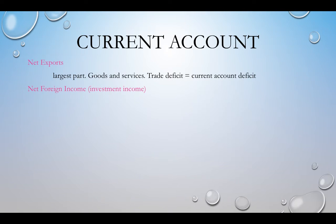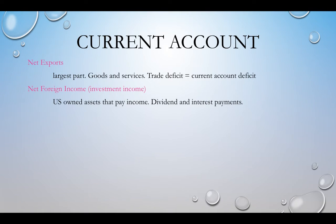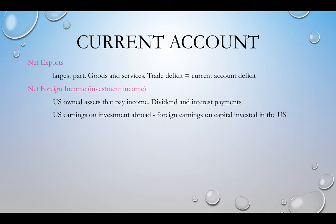Net foreign income is investment income — assets the U.S. owns abroad that pay income. So if we have factories abroad and money from there comes into our country, that's part of the current account. Interest payments on loans work similarly. Conversely, if Japan has a factory here and sends profits to Japan, that's a debit — money going out. Money coming in is a credit; money going out is a debit.